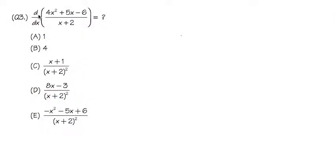Okay, for number 3, we are going to take the derivative with respect to x of 4x² + 5x - 6 over x + 2. And by the look of this equation, it suggests that we have to use the quotient rule, right?